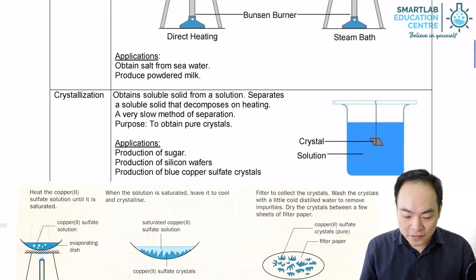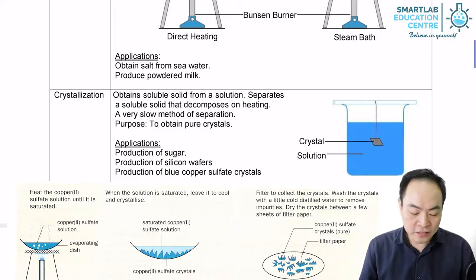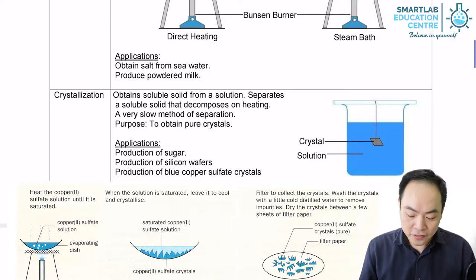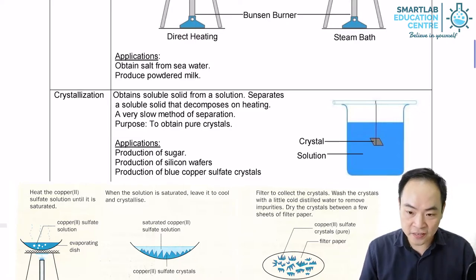There are many substances that break down easily when they are heated strongly. For example, sugar breaks down when heated into water and carbon solid. Salts such as copper sulfate crystals give off water and become powdery when heated. For such substances, evaporation to dryness is not a good method of separation.